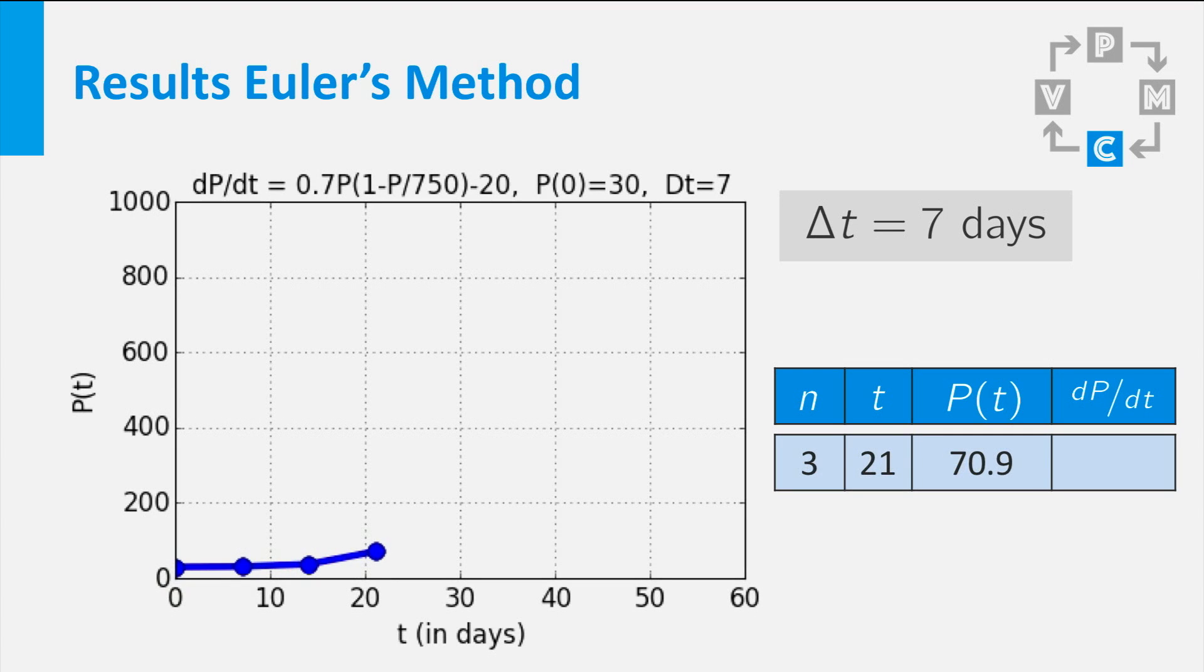P after three weeks becomes 70.9. The slope is rapidly increasing. It is now 24.9 per day. And then P rises to 245. The slope becomes very steep.